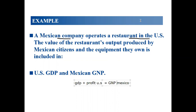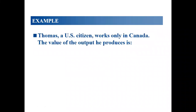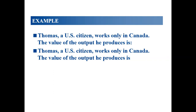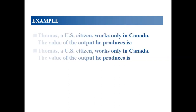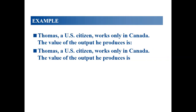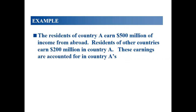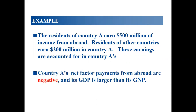Another example: Thomas, a U.S. citizen, works in Canada. The value of output he produces is reflected in Canada's GDP, but the income or transfer goes back to his home country. If residents of country A earn 500 million from abroad and non-residents earn only 200 million in country A, then country A's net factor payments from abroad are negative, meaning its GDP is larger than its GNP.